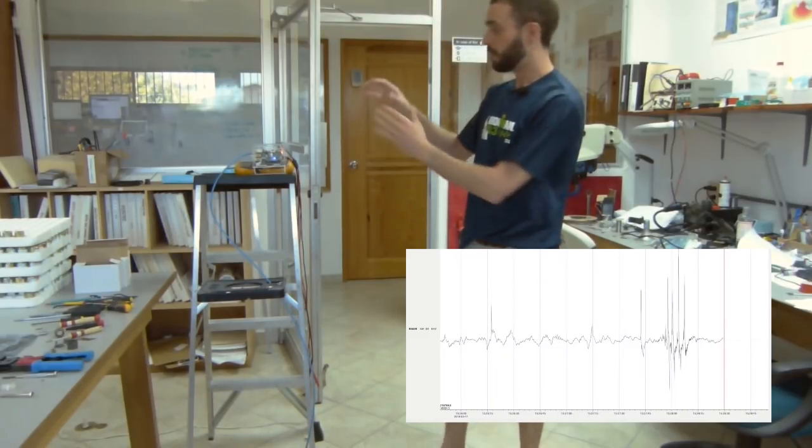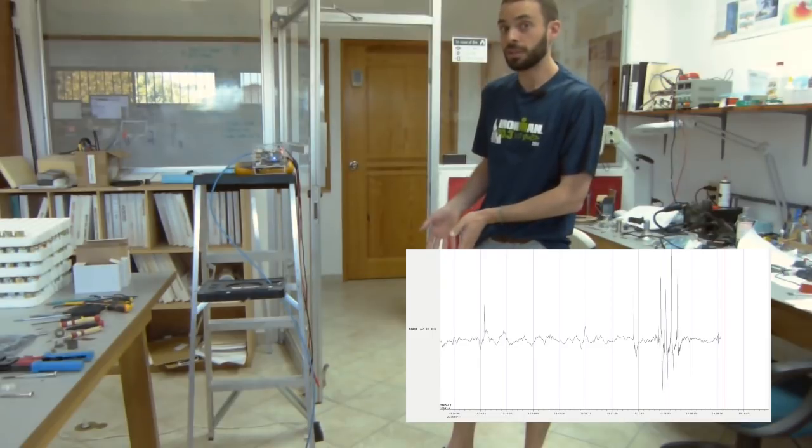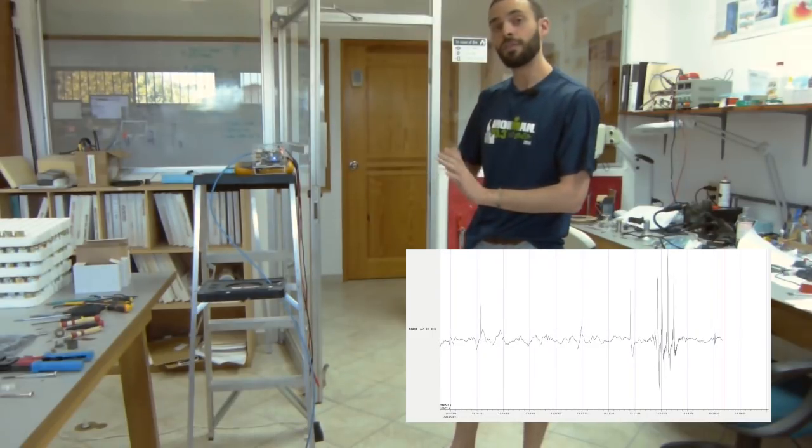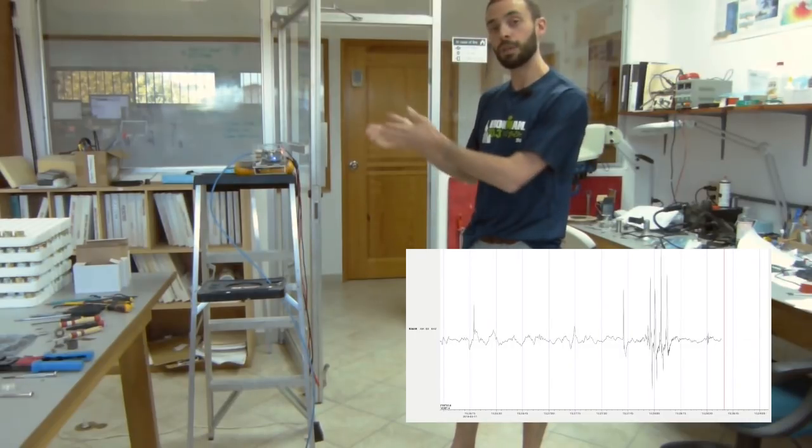The way we'll do that is we'll take the Raspberry Boom off the stand here, lower it about a meter to the floor, give it a few minutes for the signal to come back to zero, and then we'll lift it back up again.